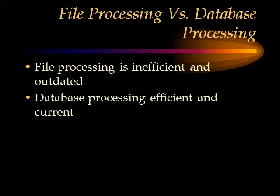In this third part of the database lecture, we will look at the different types of models available for designing database systems. There are basically two different types: one is known as a file processing model, and the other one is known as a database processing model.